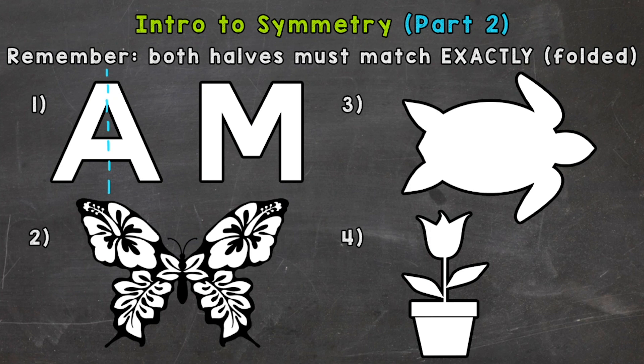So if we were to fold over that line of symmetry, the A, each side of the A would match perfectly. So that is a line of symmetry, and that particular A is symmetrical. Now not all A's are symmetrical. It depends what font, how you write it, uppercase, lowercase, but that one in particular is symmetrical.